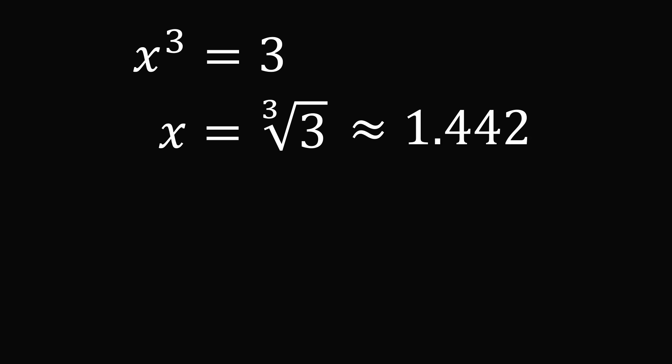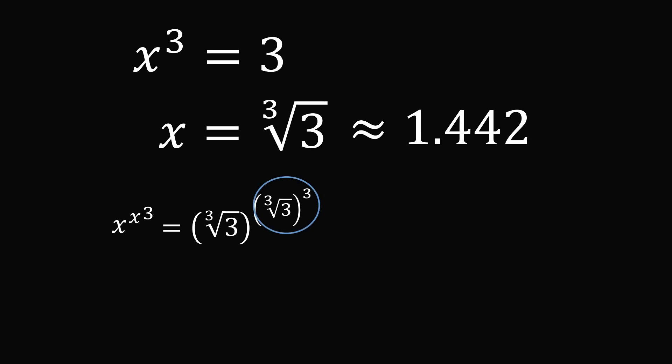As a final check, let's substitute this value into the original expression. We have x to the power of x cubed; we substitute in the cube root of 3 for x. The cube root of 3 to the power of 3 is just equal to 3, and then again we have the cube root of 3 to the power of 3, which equals 3. So in fact we do have x to the power of x cubed equal to 3 — we have found a real solution.